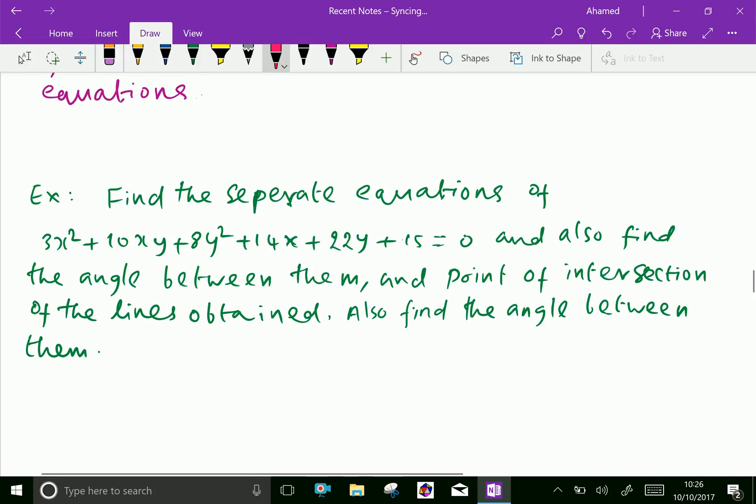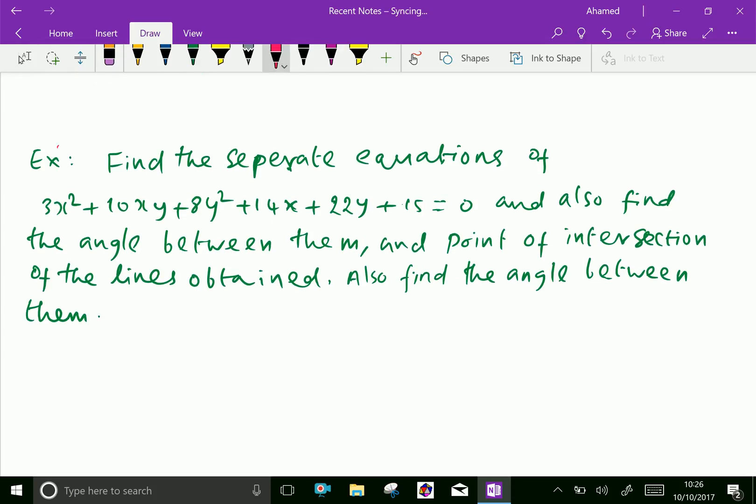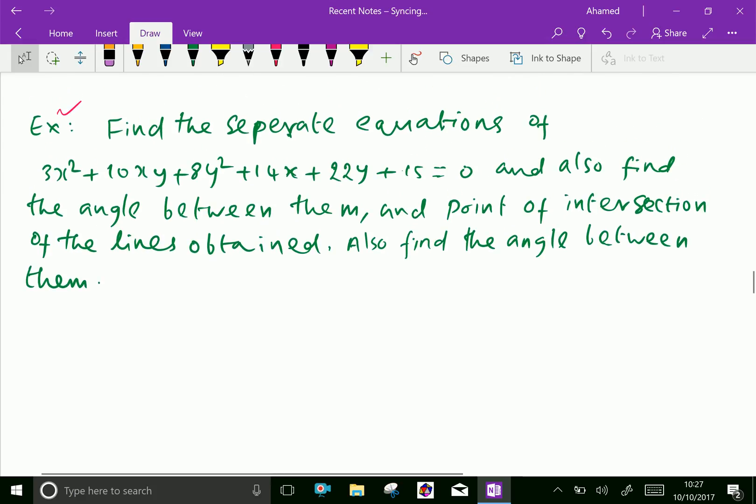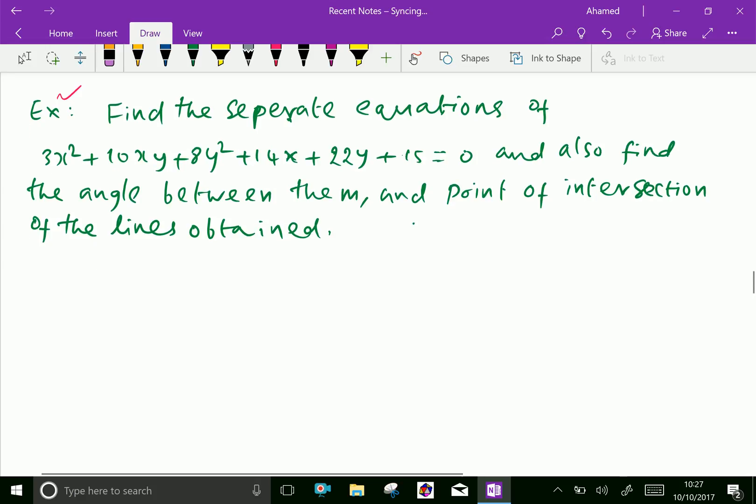Let us do an example to understand this concept. Find the separate equation of 3x squared plus 10xy plus 8y squared plus 14x plus 22y plus 15 equal to zero, and also find the angle between them and point of intersection of the lines obtained. Let us start this problem.